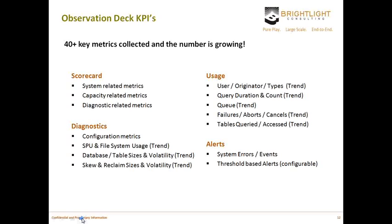In total, the Observation Deck collects over 100 metrics. We consider 40 plus of these to be key metrics, and since this is a Software as a Service, that number continues to grow. You'll see some of the highlighted key metrics we are pulling. Keep in mind, this is side-by-side analysis where you can compare and contrast any machine that you have, and we do trend all data. Since we snapshot data on a continual basis, you can go back and create an easy-to-use time series to help you with forecasting the future.